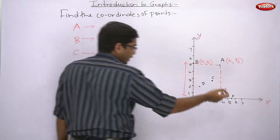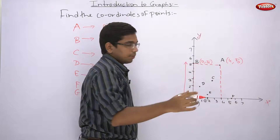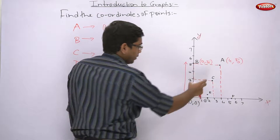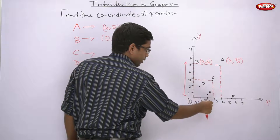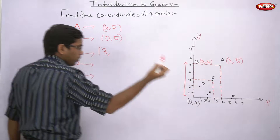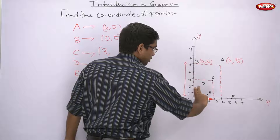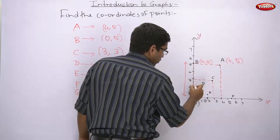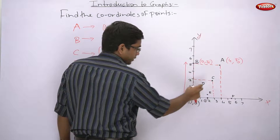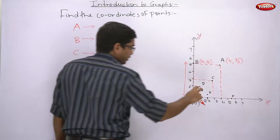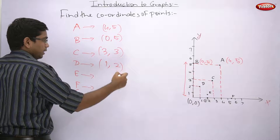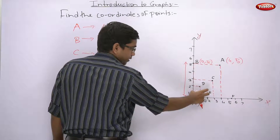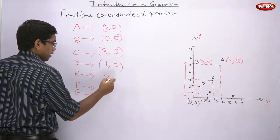For C: draw horizontal and vertical dotted lines until they intersect both axes. The horizontal distance from origin is 3, so x-coordinate is 3. The vertical distance from origin is also 3, so y-coordinate is 3. Therefore C's coordinates are (3, 3). For D: horizontal distance is 1 and vertical distance is 2, so D's coordinates are (1, 2).